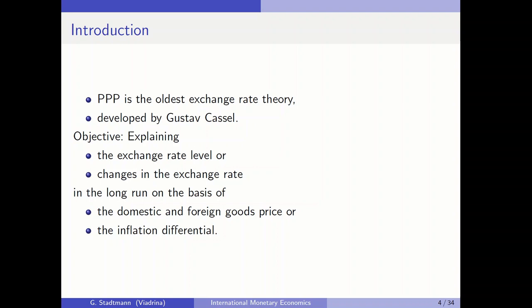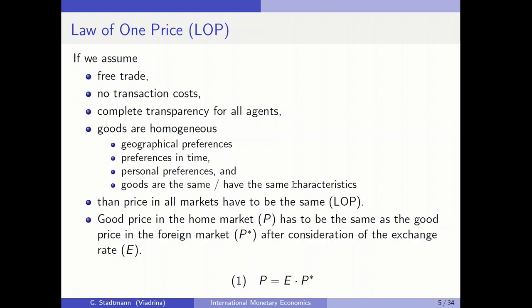Let's start with the first concept: the law of one price. The assumptions are: free trade, no transaction costs, complete transparency for all agents, and homogeneous goods. Goods are homogeneous when there are no geographical preferences, no preferences in time, no personal preferences, and when goods have the same characteristics. Under these assumptions, the price in all markets has to be the same — the law of one price holds.